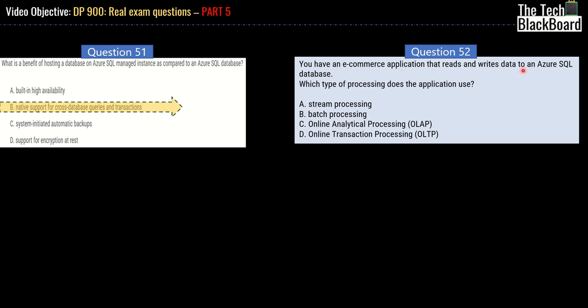Question 52 asks: you have an e-commerce application that reads and writes data to an Azure SQL Database — which type of processing does this application use? Stream processing, batch processing, online analytical processing, or online transaction processing? An e-commerce application is primarily transactional — buying, selling, B2B or B2C — so the answer is OLTP, online transactional processing.